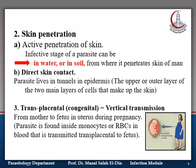Second is through skin penetration. This is either an active penetration of the skin by the infected stage itself, where the infected stage is present in water or in soil and by itself actively penetrates the skin of man when it comes in contact with it. Or through direct skin contact, where the parasite lives in tunnels in the epidermis — the upper layer of the skin — and through direct skin contact with another person for a long and repeated time, the infected stage is transmitted to the new person.